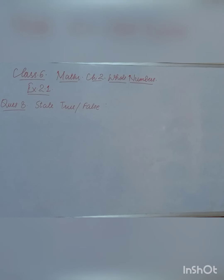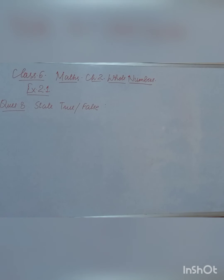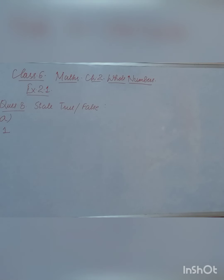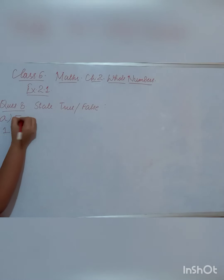The first part says: 'Zero is the smallest natural number.' This statement is false, because zero cannot be the smallest natural number. Natural numbers start from 1, so zero does not qualify as a natural number.